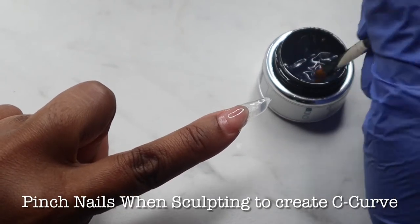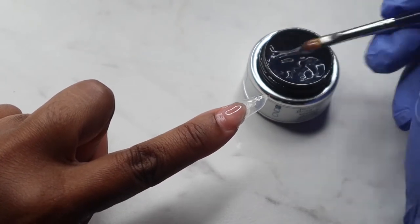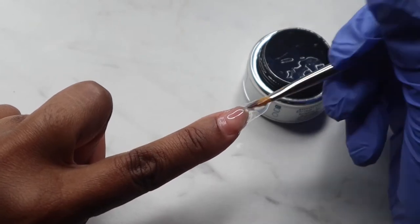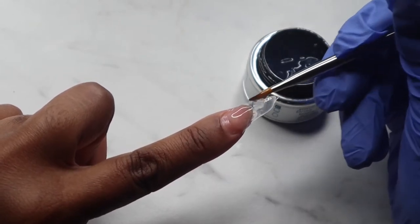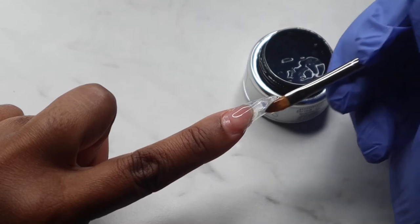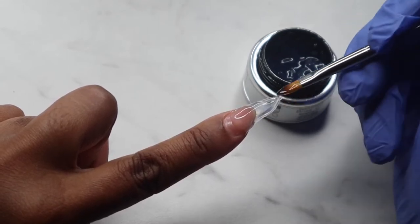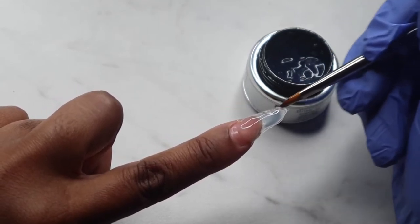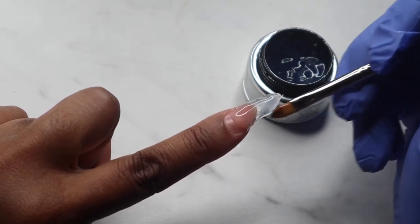After removing the form, I then proceed to building the rest of the nail out by building my apex in the center of the nail with the gel. I prefer to remove the form as this helps with seeing where the product is laying because the product is clear.